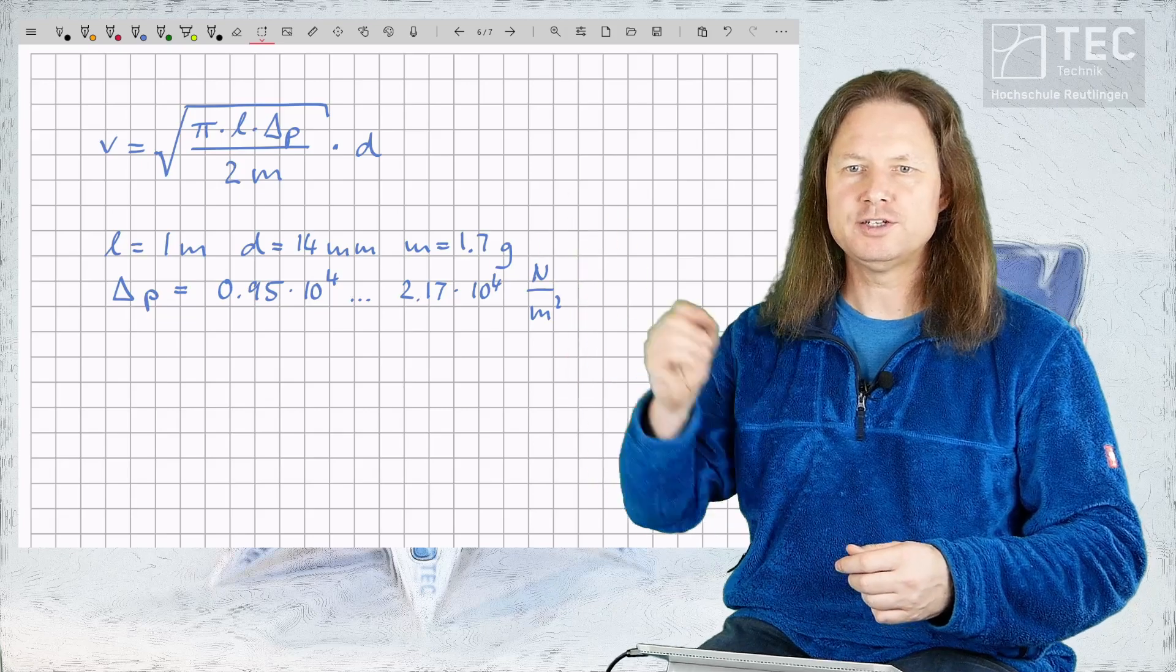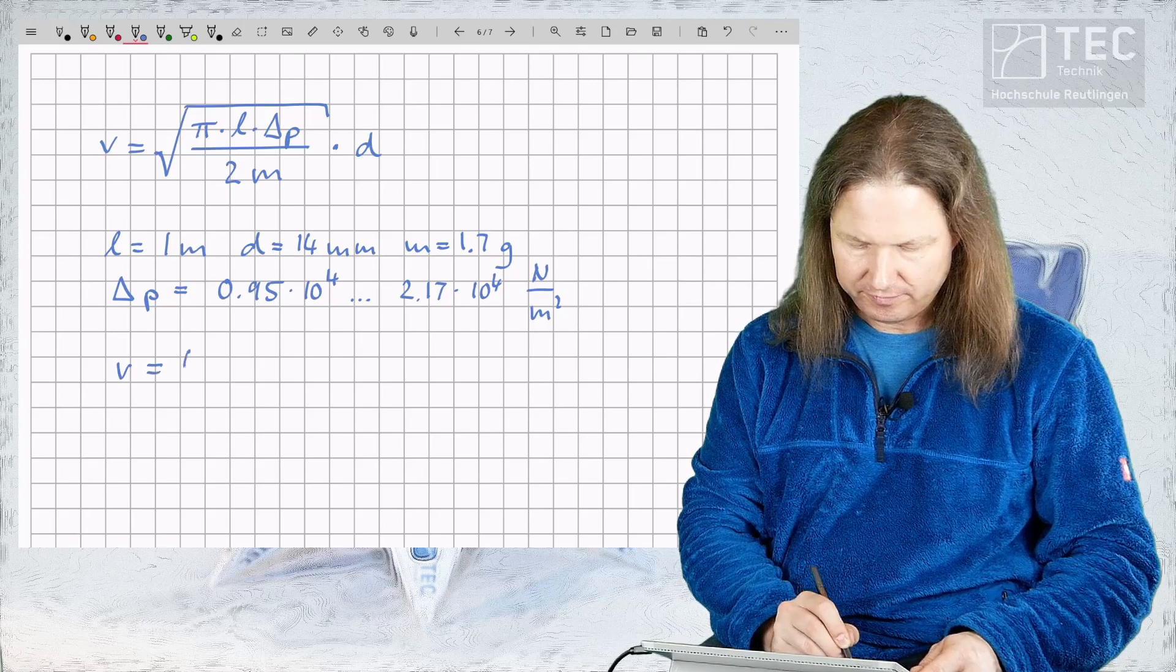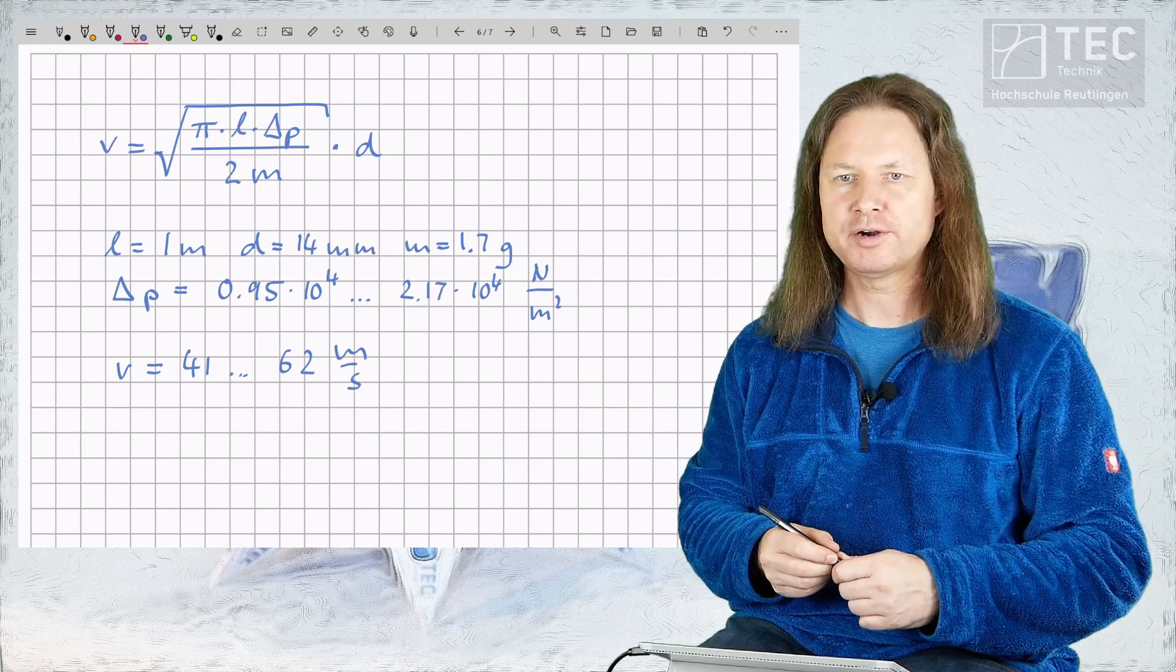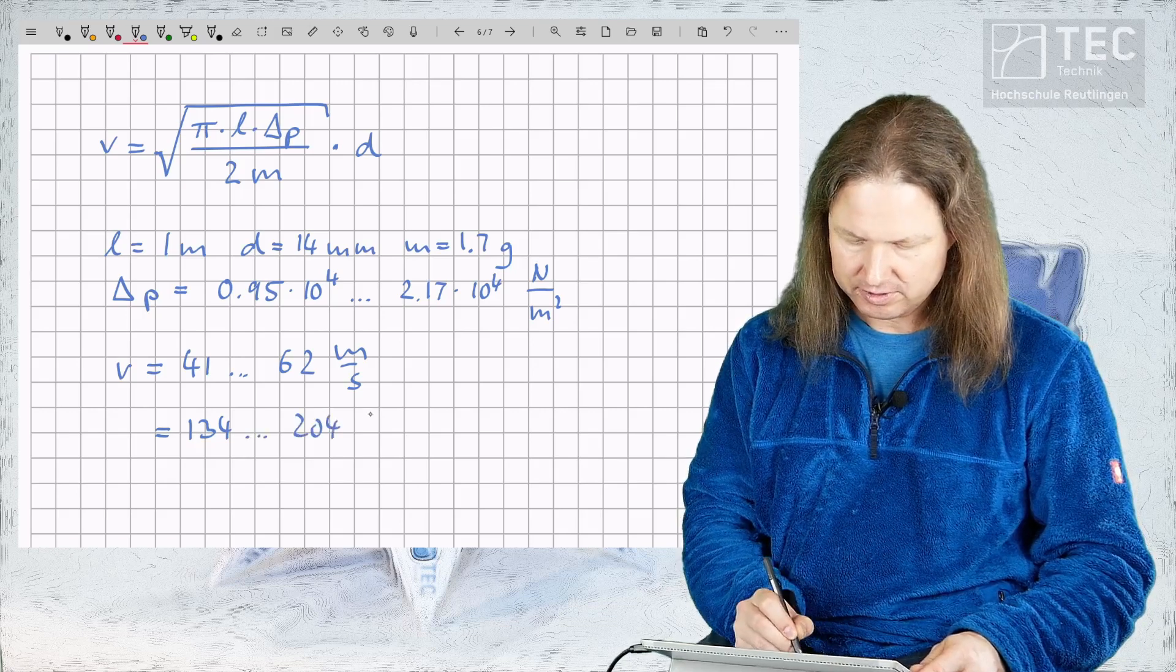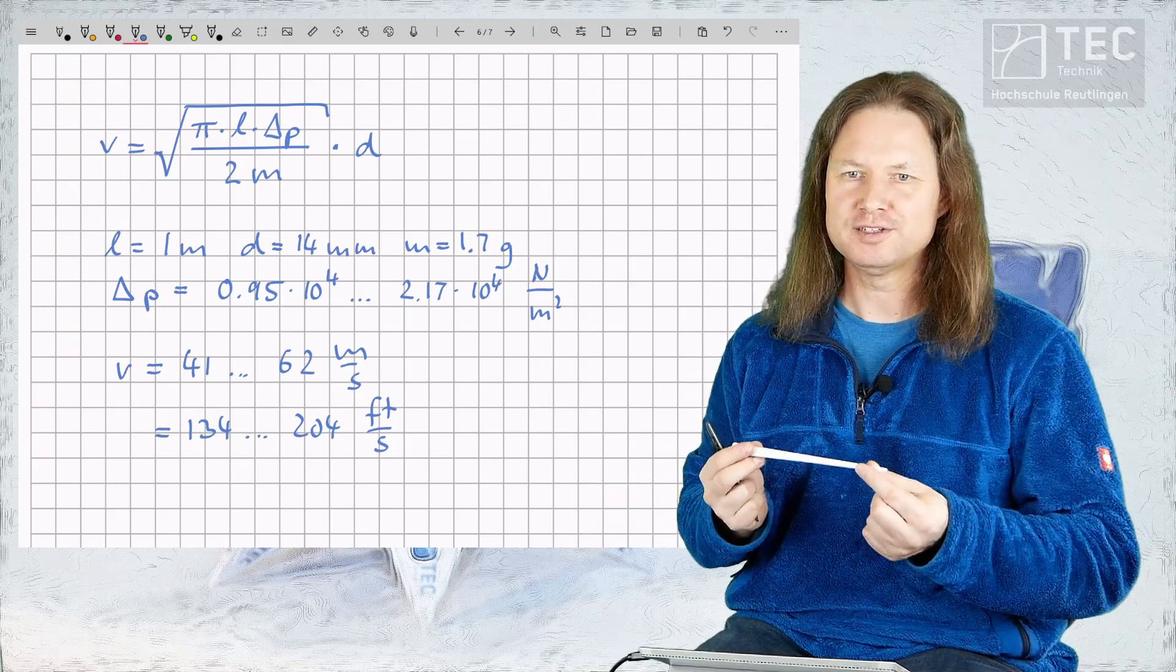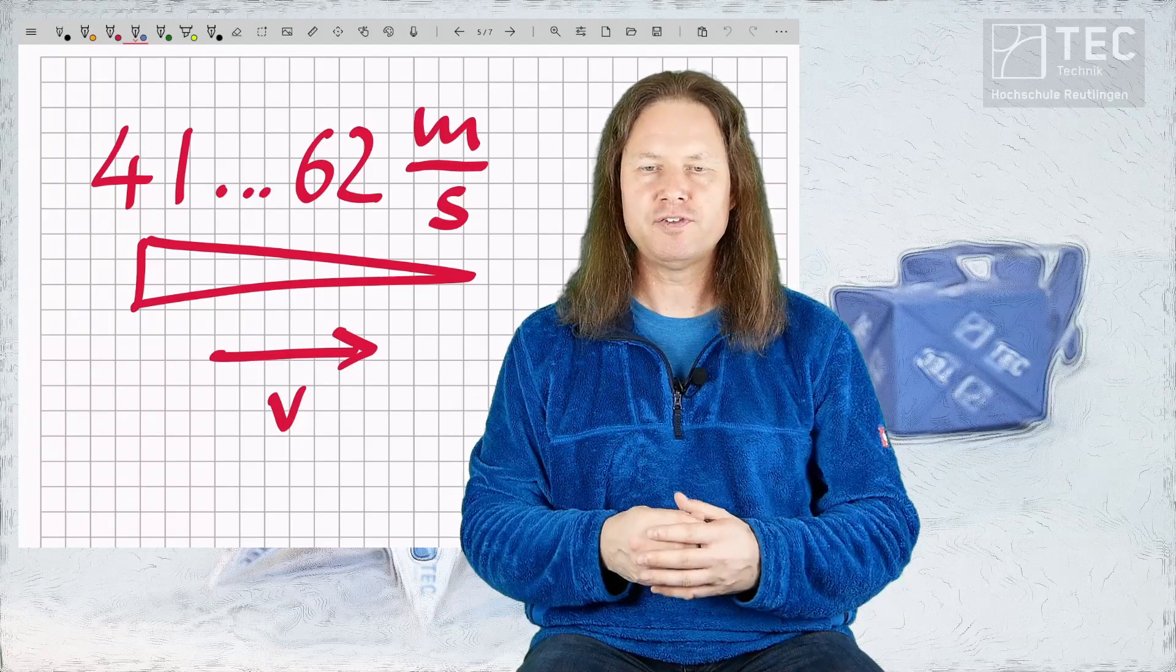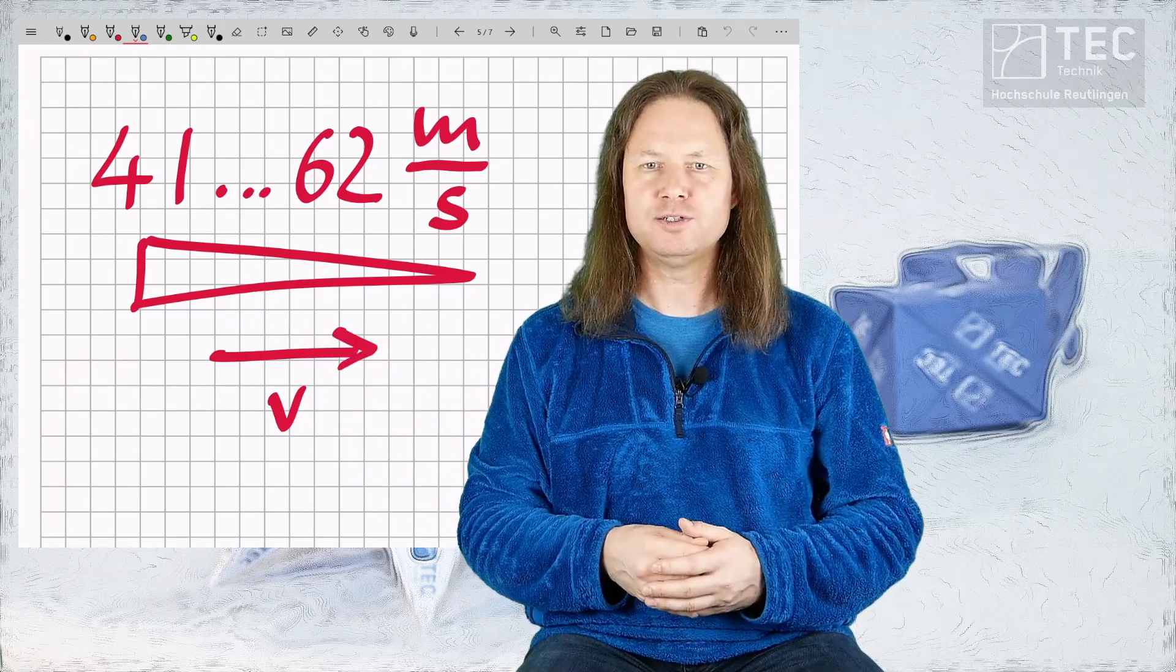Using these values in our equation yields an expected muzzle velocity in the range from 41 up to 62 meters per second. Or equivalently in American units that's 134 up to 204 feet per second. It's quite a bit for this little paper dart. All right here we are now. Our theoretical calculations that we've done before ever firing a single shot have predicted a muzzle velocity ranging from 41 to 62 meters per second.